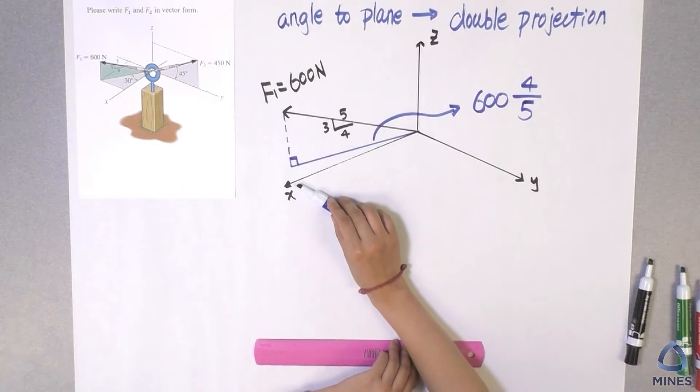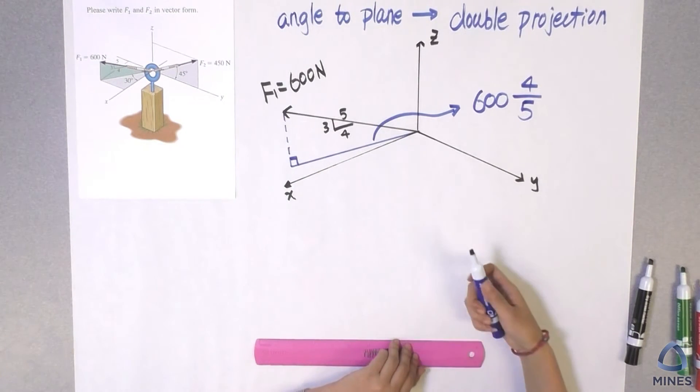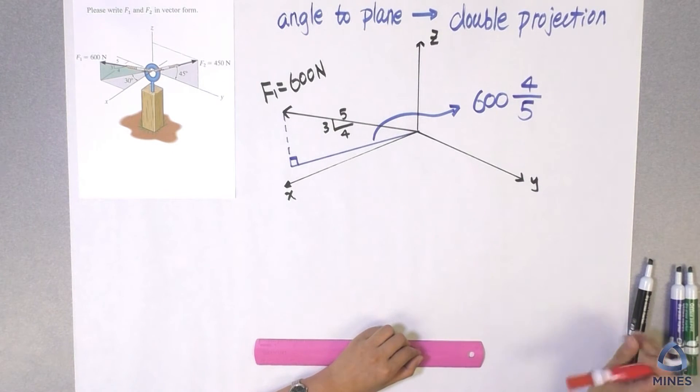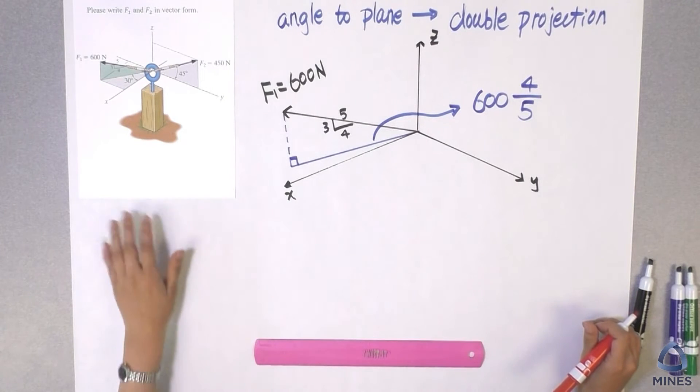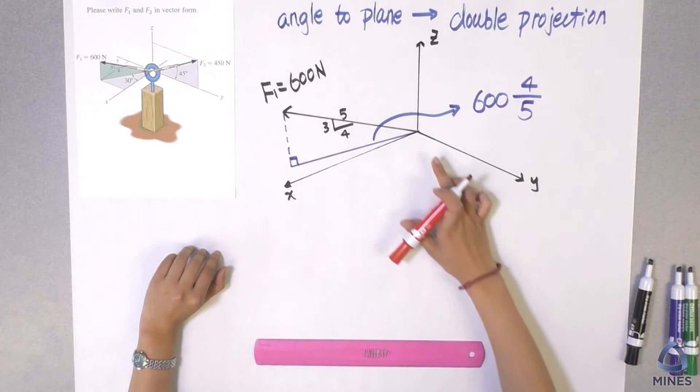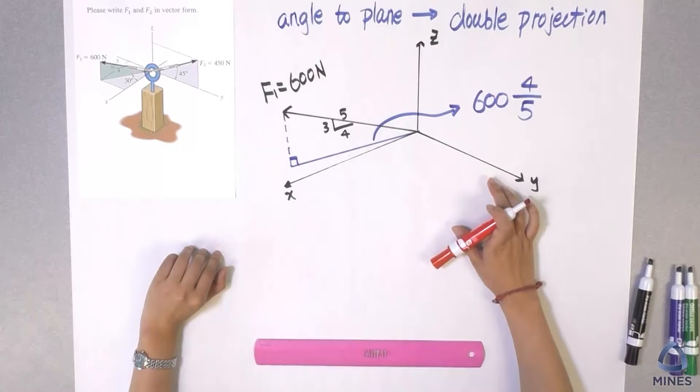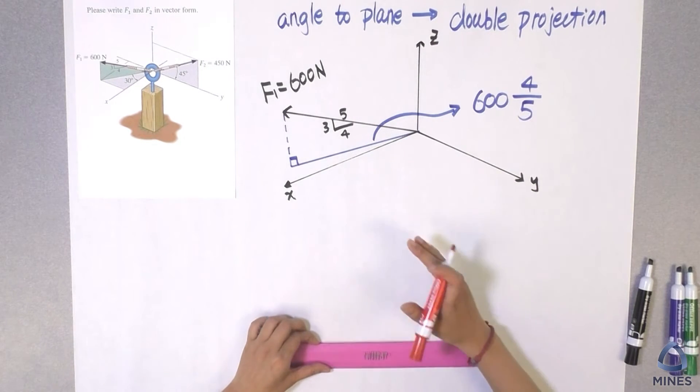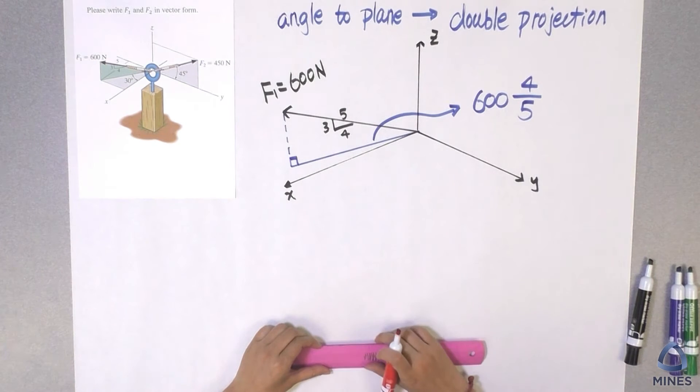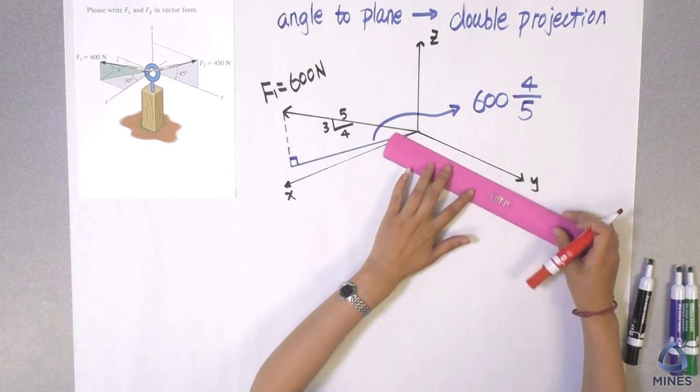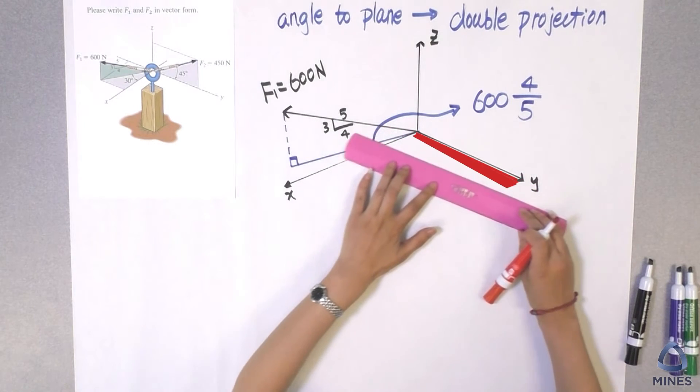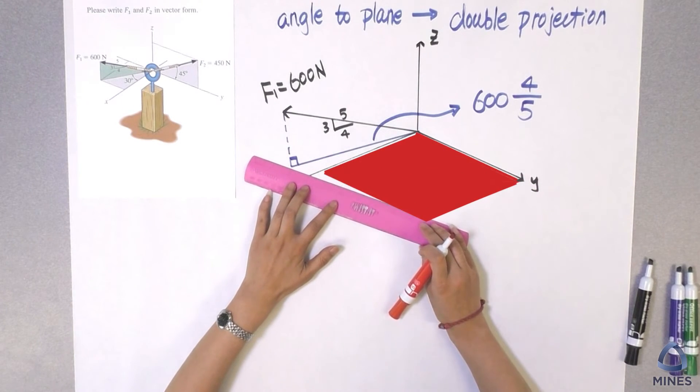Is this blue line on the X axis, on the Y axis? No, it's only in the XY plane, right? So we have to find the X component, that's going to be i hat. Y component, that's going to be j hat. However, this blue line is neither on the X or the Y axis. So what we are going to do, we are going to project one more time to the XY axis.